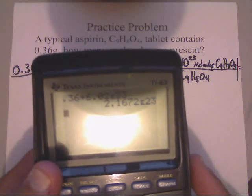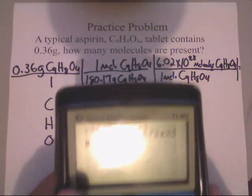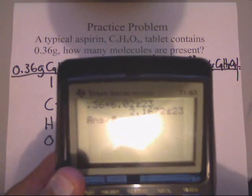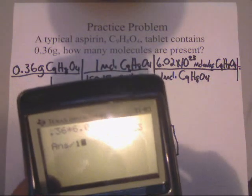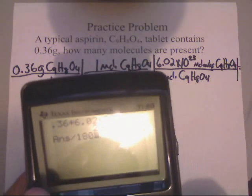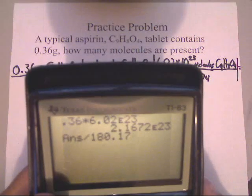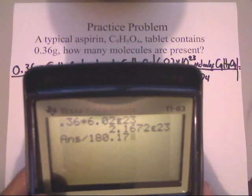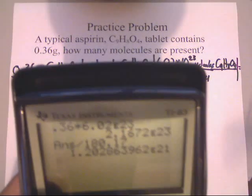Gives us this number from the numerator. Now, we've only got one number in the denominator. So, I'm going to divide that number, divided by, and we'll type in 180.17. You can see that. 180.17. And equals.